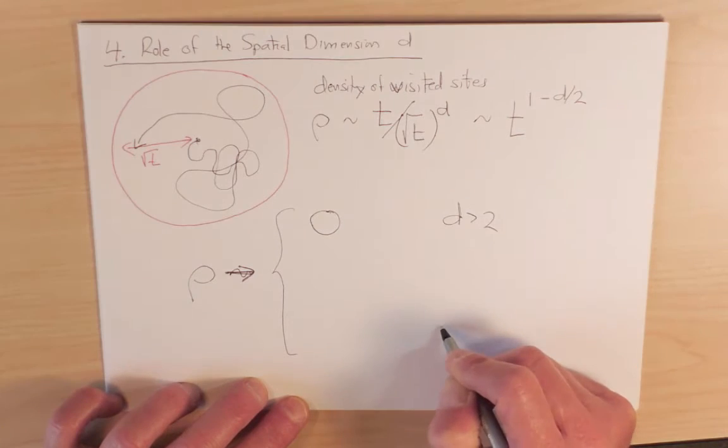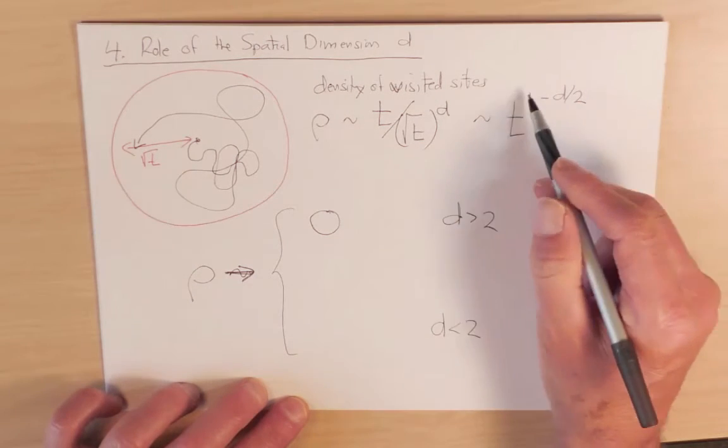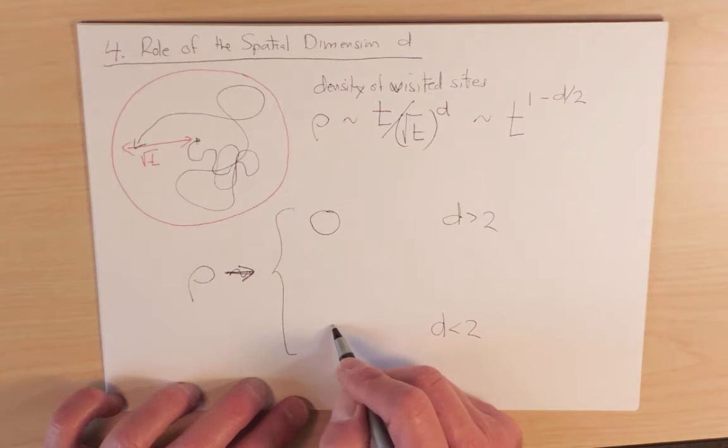For d less than 2, on the other hand, then this is a positive exponent. And so this density of visited sites is approaching infinity.